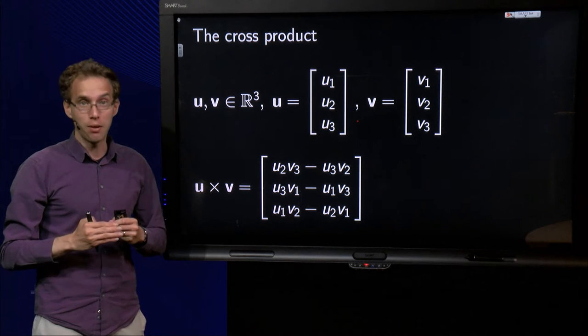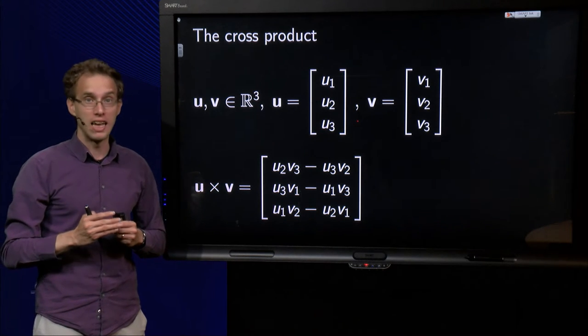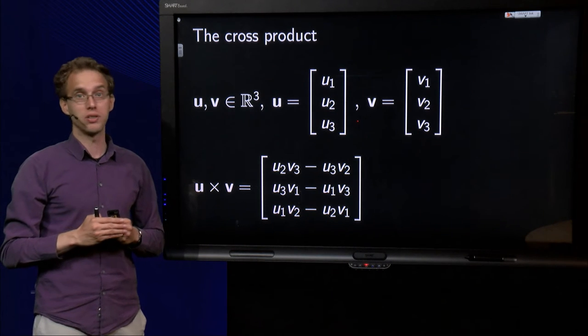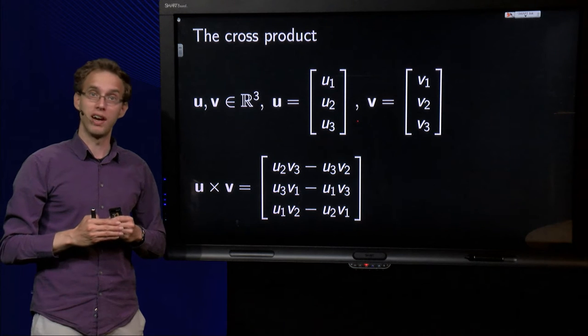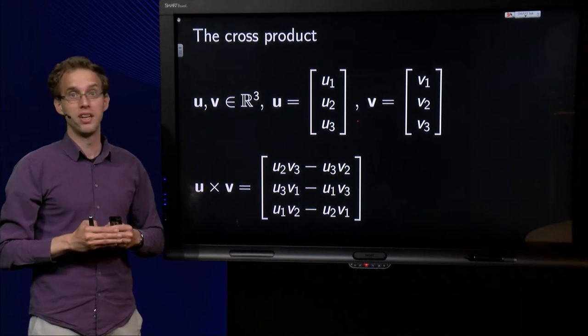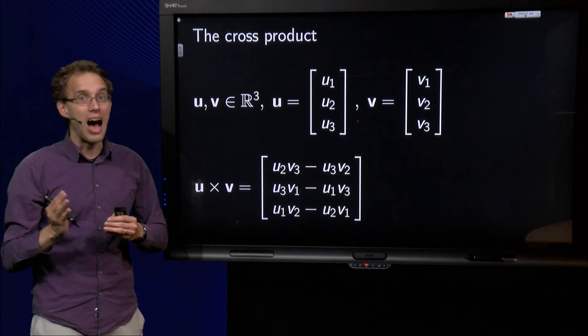You can compute the inner product for all vectors as long as they have equal length. The cross product, on the other hand, can only be calculated between vectors in R3. So what is this cross product? Why do we need it? How do we compute it?